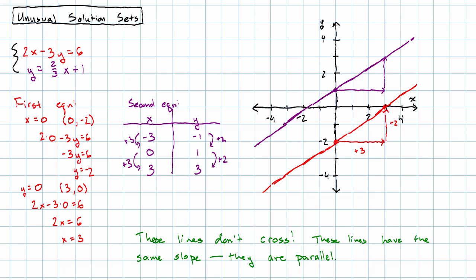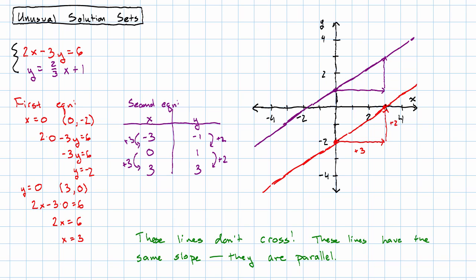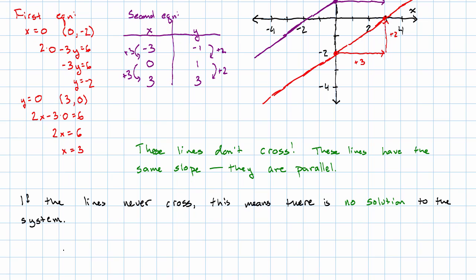What does that mean for our system of equations? If the lines never cross, that means there is no solution to the system. In the graph, we see parallel lines. If we were to examine the equations more closely, we would see the same slope but different y intercepts. We call such a system inconsistent. That's one of the things that could go wrong. Let me show you another thing that could go wrong.